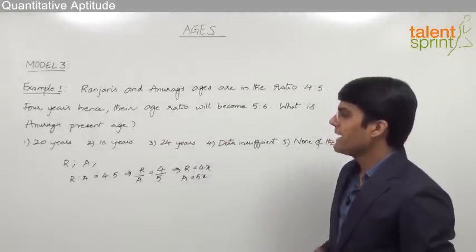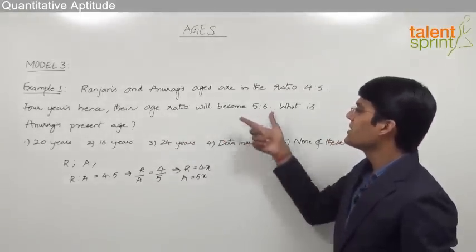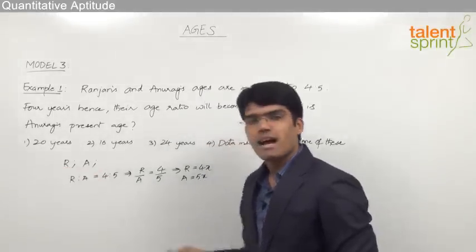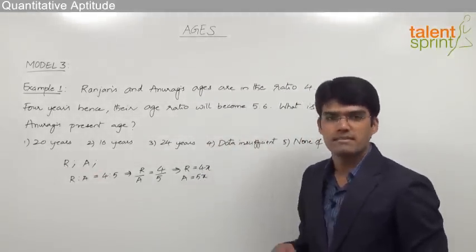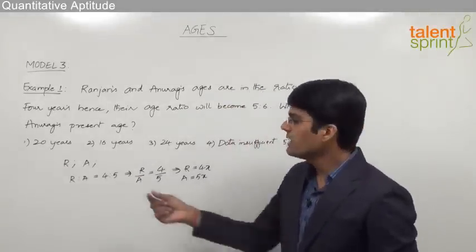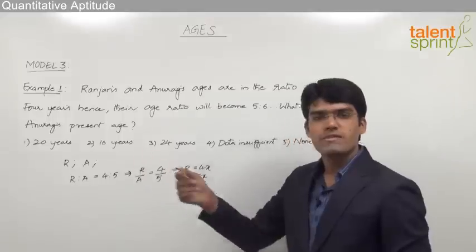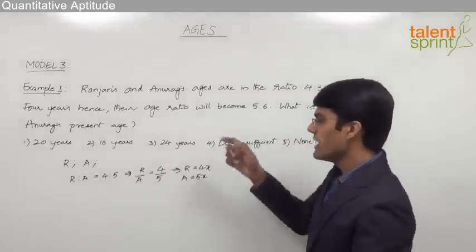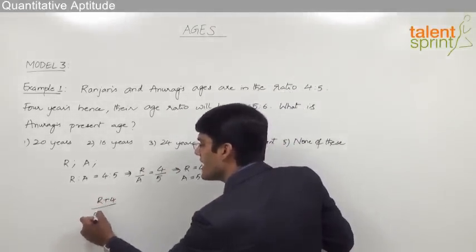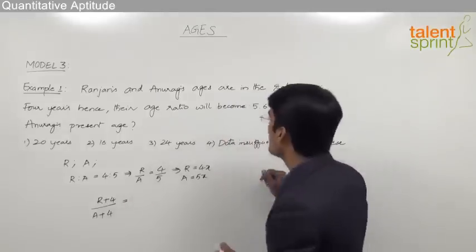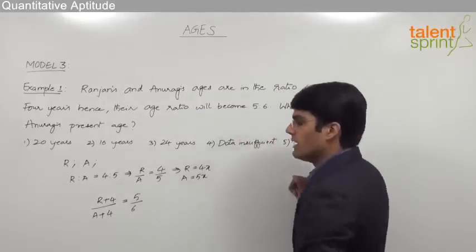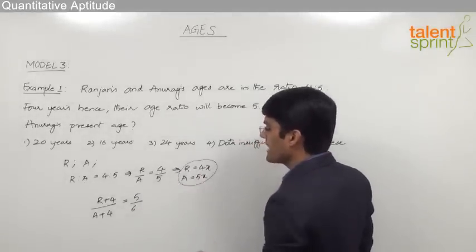We can take r equals 4x, that is 4 parts, and a equals 5x. The second statement is: four years hence their age ratio will be 5 is to 6. After four years, Ranjan's age will be r plus 4 and Anurag's age will be a plus 4. So we can say that (r + 4) by (a + 4) equals 5 by 6.